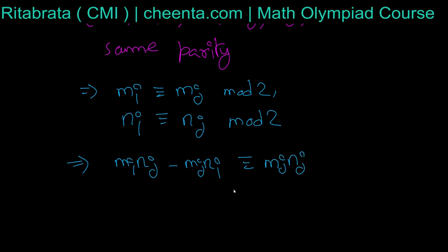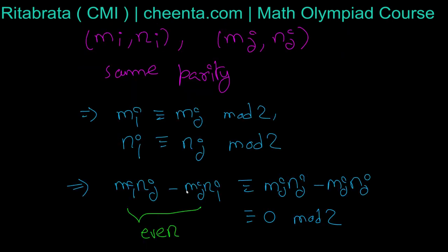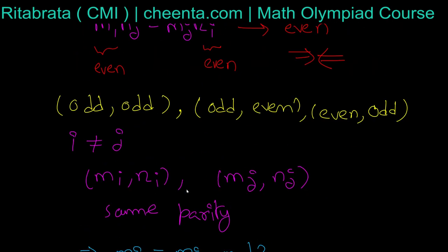I can replace nᵢ by nⱼ. This gives mⱼnⱼ - mⱼnⱼ, which is congruent to 0 (mod 2). So this quantity becomes even. This is again a contradiction because the modulus is 1 and no even number's modulus can be 1.